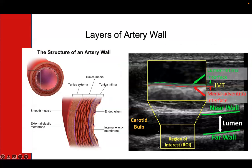Let's take a closer look at the layers of the artery wall. On the left, you can see a cross section of your artery and how it's made up of many different layers. The inside layer is called the tunica intima, which is Latin for inner coat.